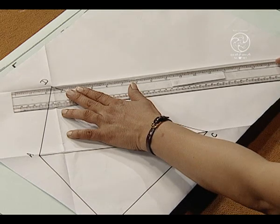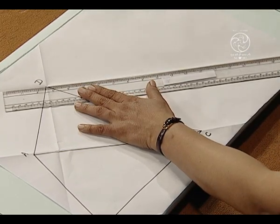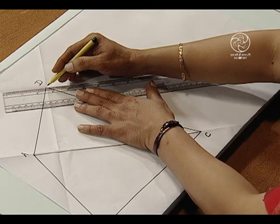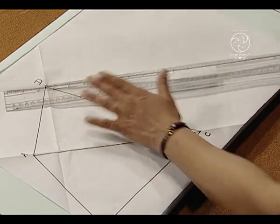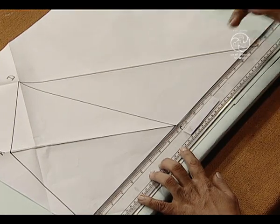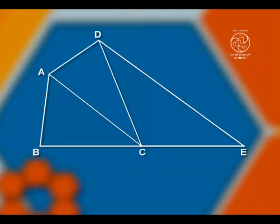Now, we will draw a line on this crease passing through D, and we will extend the line BC to meet this line at the point E.